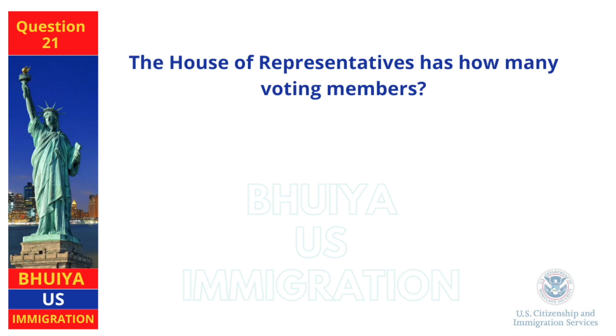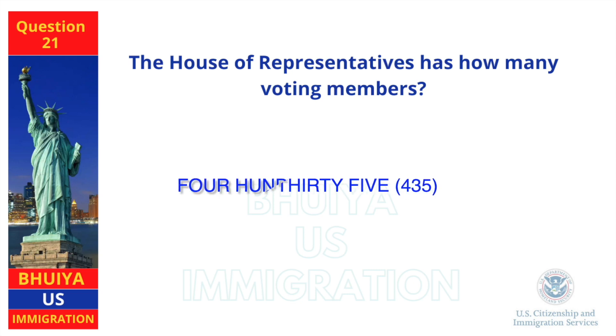The House of Representatives has how many voting members? 435.